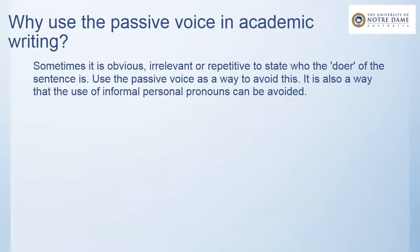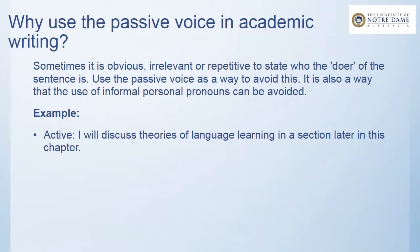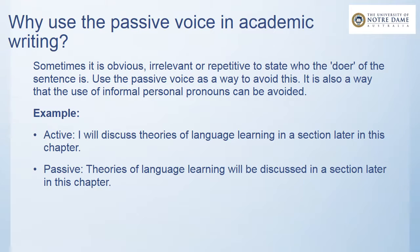Here's another use. For example, here is an active sentence: I will discuss theories of language learning in a section later in this chapter. We know that it's generally not a good idea to use informal personal pronouns like 'I' in academic writing, so I need to get rid of this pronoun by transforming the sentence into the passive, like this: theories of language learning will be discussed in a section later in this chapter.